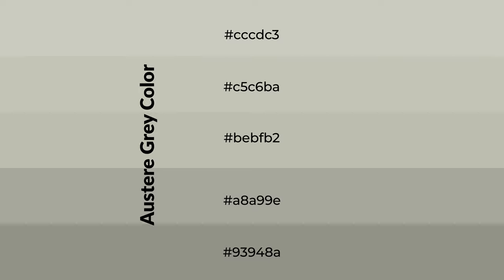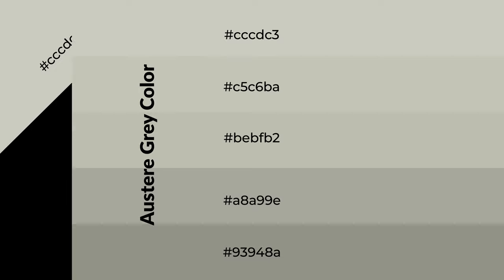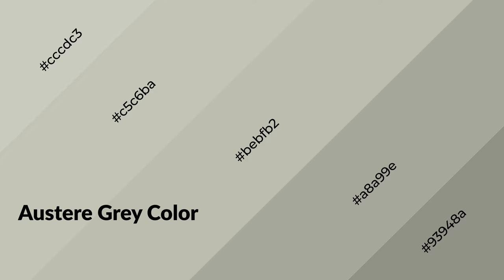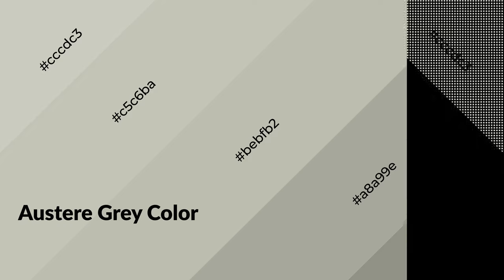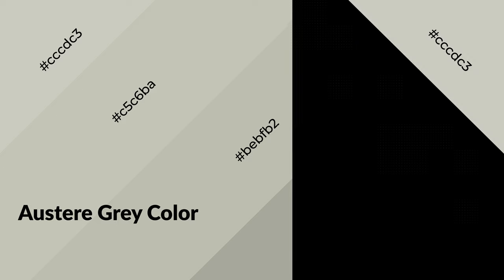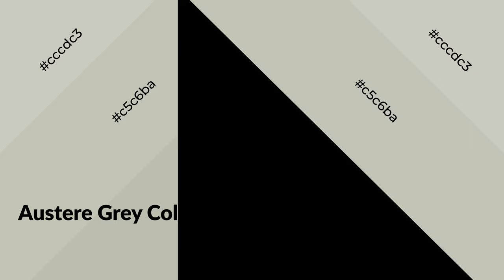To generate shades of a color, we add black to the color. It is used in patterns, 3D effects, and layers. Shades create depth and drama. Austere gray is a warm color and it emits cozier and active emotion.